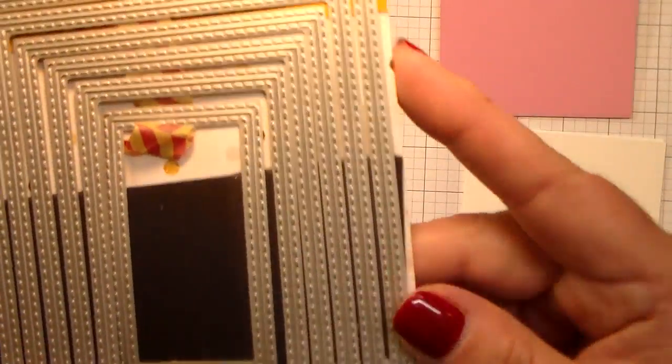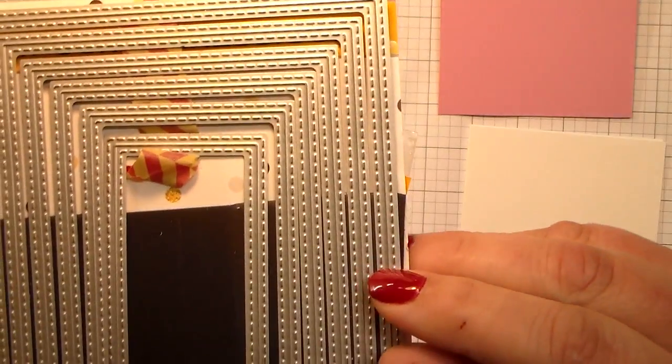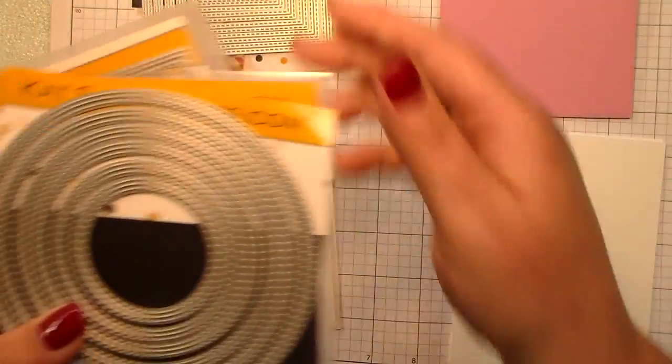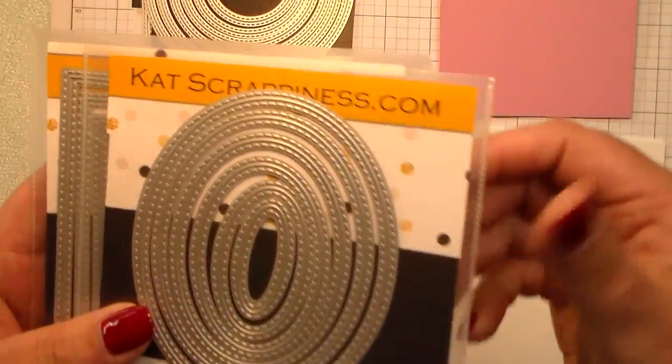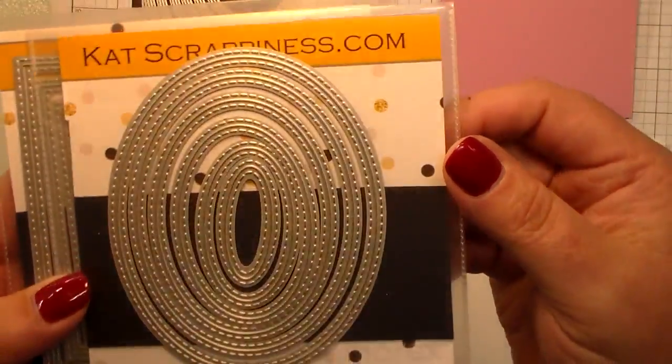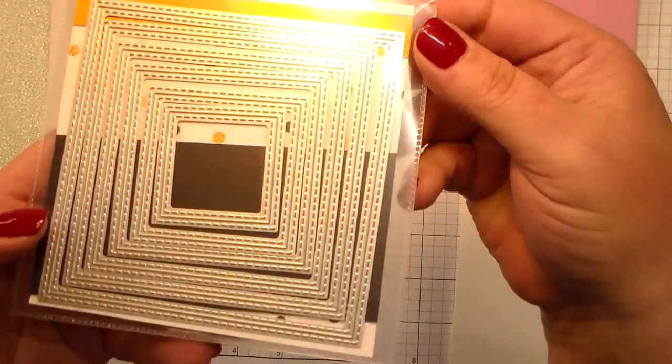There are six dies in each set, and as you can see here, there's a cut line on each die and embossed stitching lines on either side. They come in rectangles, circles, ovals, and squares.